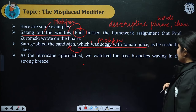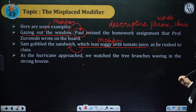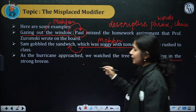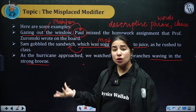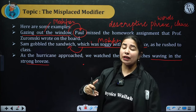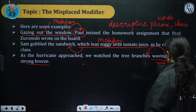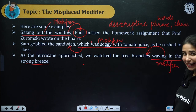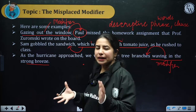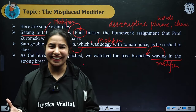Another example: 'As the hurricane approached, we watched the trees, branches waving in the strong breeze.' Here, 'waving in the strong breeze' is a modifier. What was waving or moving in the strong breeze? Tree branches. So this is a modifier offering explanation, and the arrow points to what it is explaining. This concept is very similar to adjectives and adverbs — it offers description.